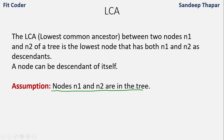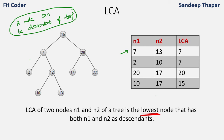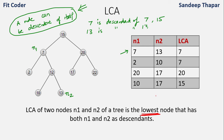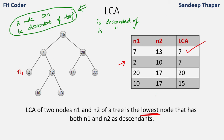Let's understand this with an example. In the first case, N1 is 7 and N2 is 13. Node 7 is a descendant of nodes 7 and 15, since a node can be a descendant of itself. Node 13 is a descendant of 13, 12, 7, and 15 — all nodes on the path from the root to N2. The common nodes are 7 and 15, and the lowest is 7, so the LCA is 7.